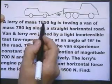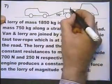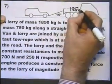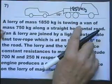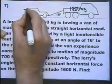A lorry of mass 1850 kilograms, let's write that on there. I think we'll make our diagram as we read it through, is towing a van of mass 750 kilograms.